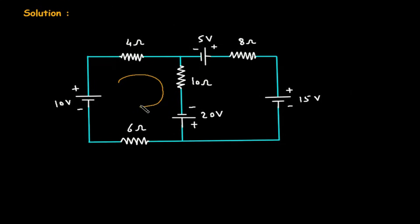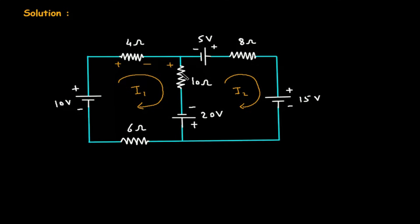Let's assume this is mesh number 1 with current I1, and this is mesh number 2 with current I2. According to the direction of each current, the polarities are assigned: positive and negative terminals are marked accordingly for both meshes.